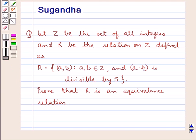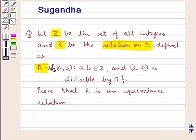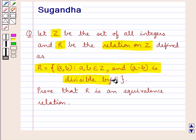Hello and welcome to the session. In this session we discuss the following question: Let Z be the set of all integers and R be the relation on Z defined as R equals the set containing elements (A, B) such that A and B belong to Z and A minus B is divisible by 5. Prove that R is an equivalence relation.